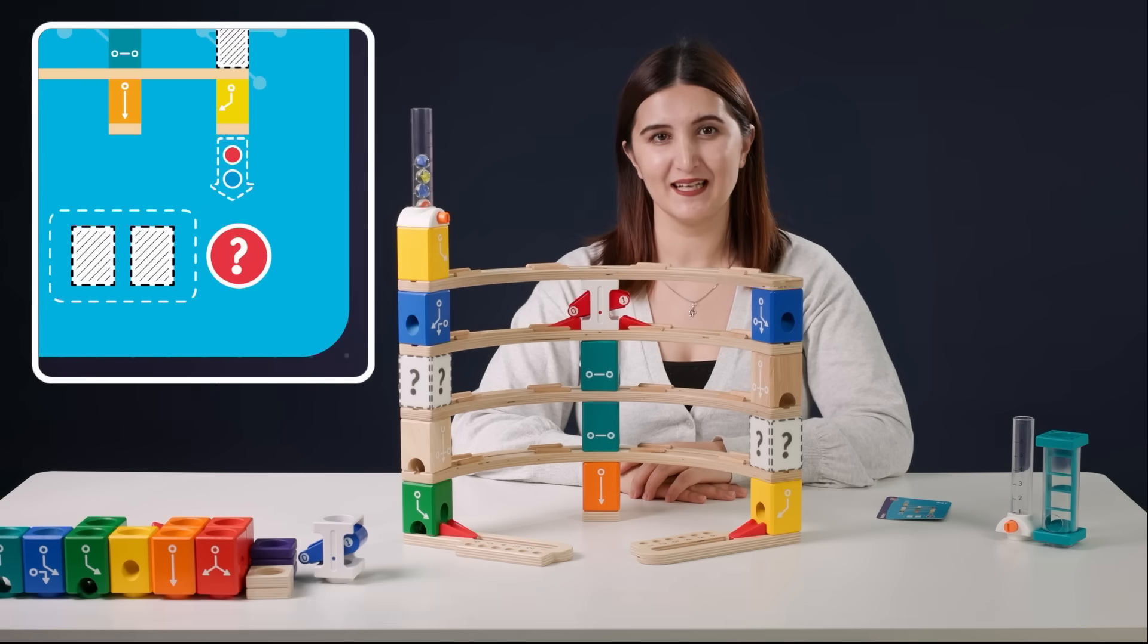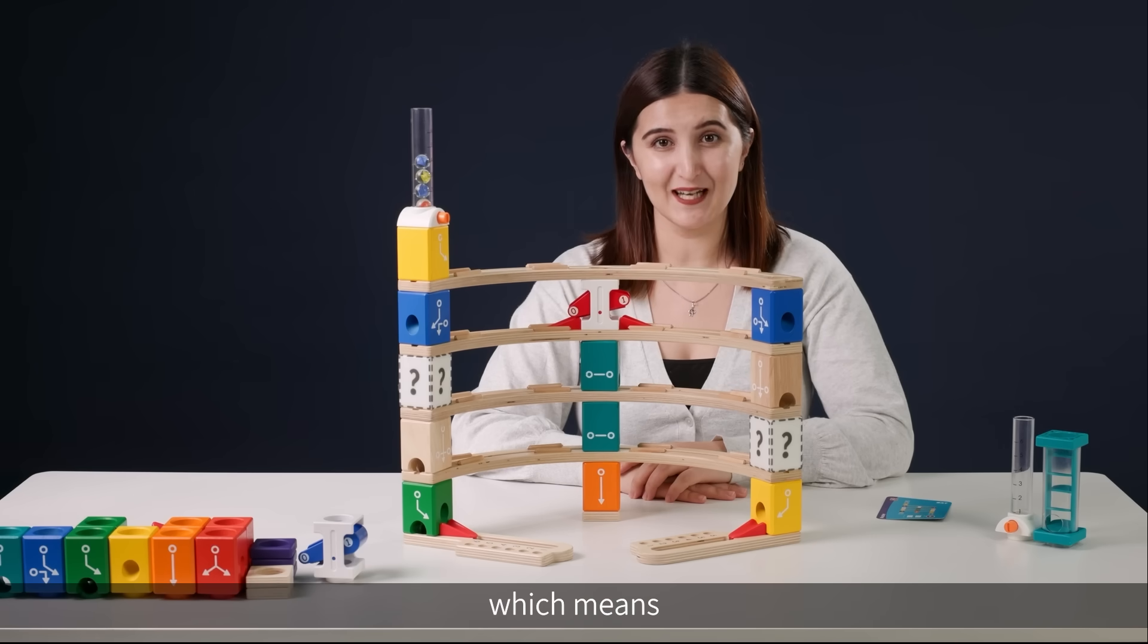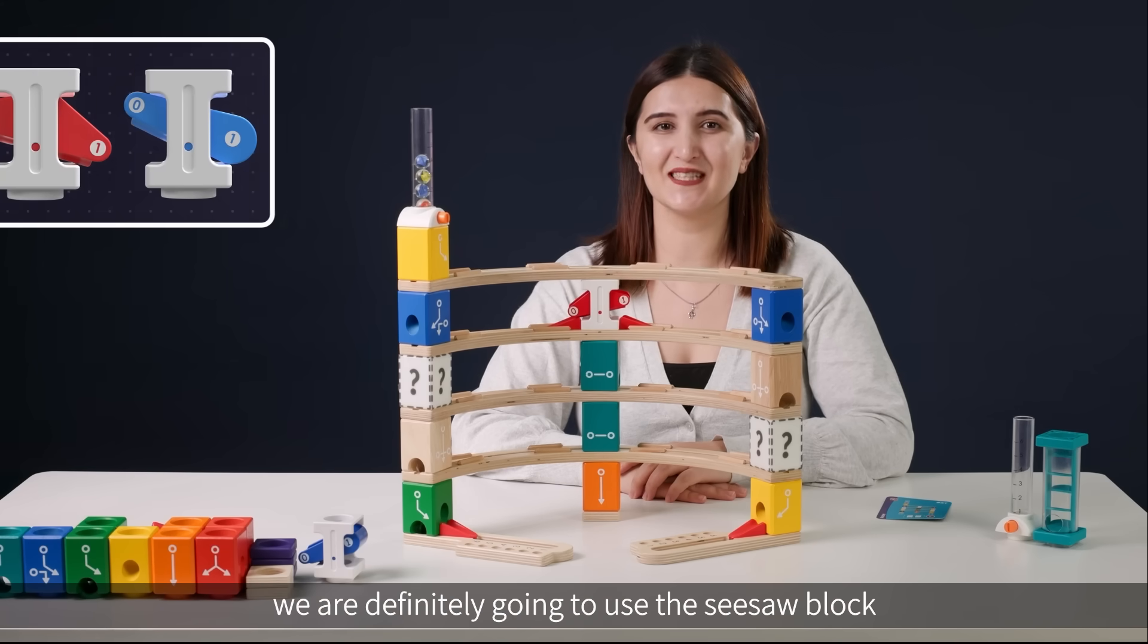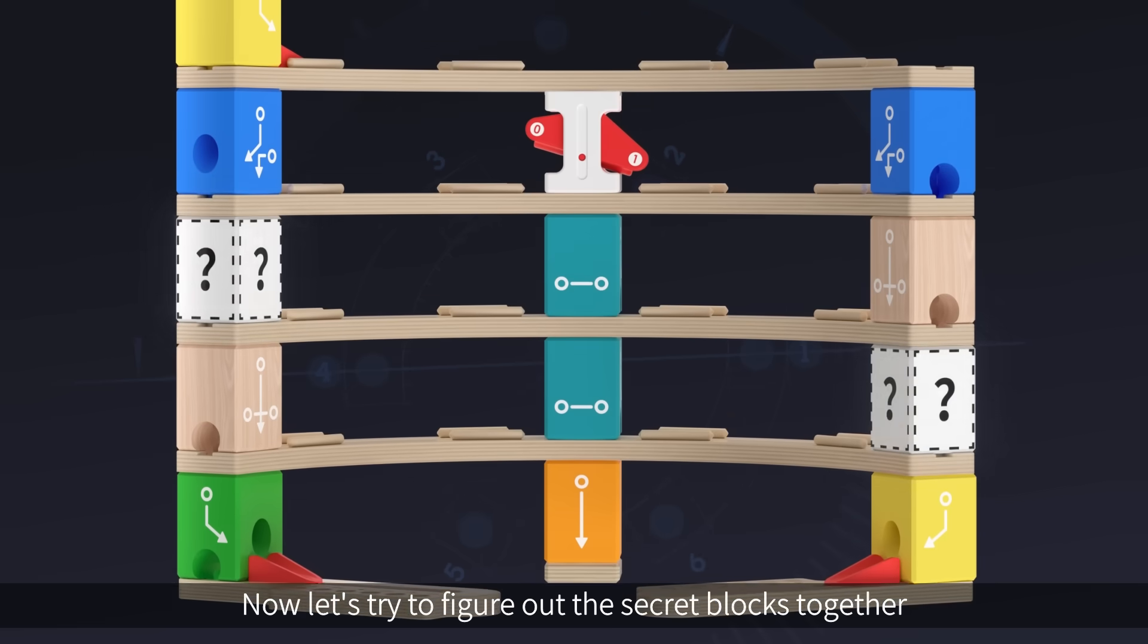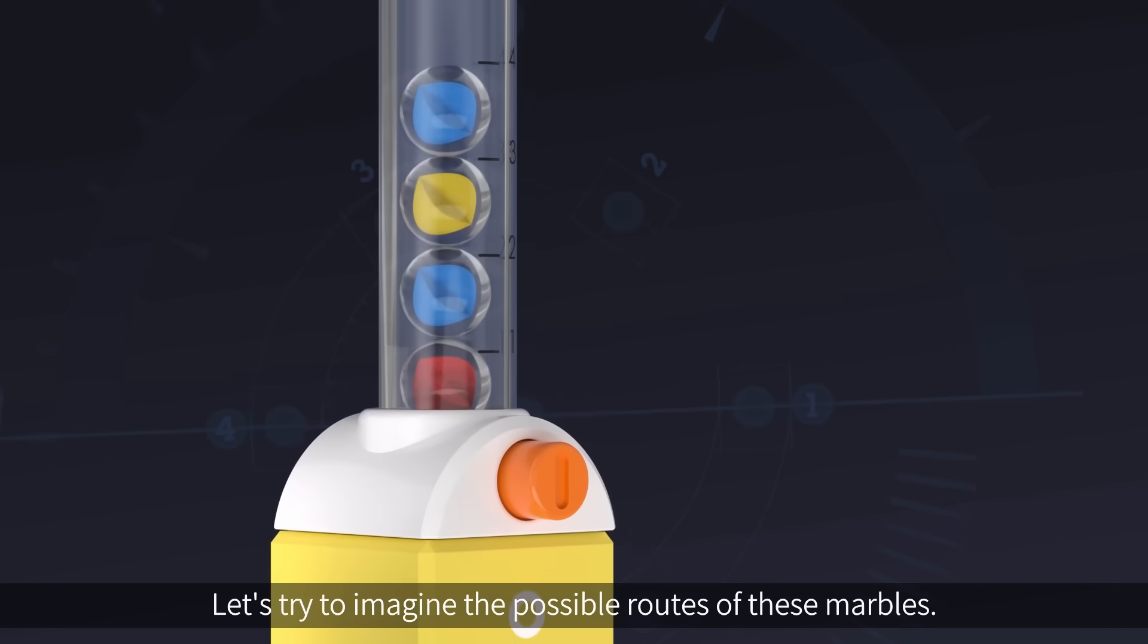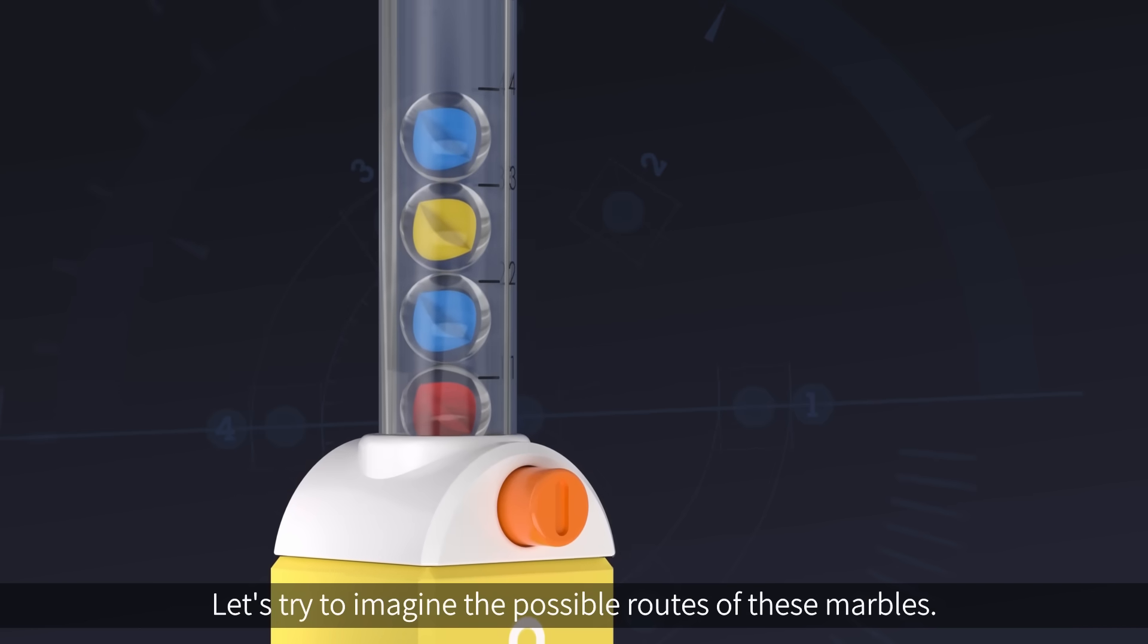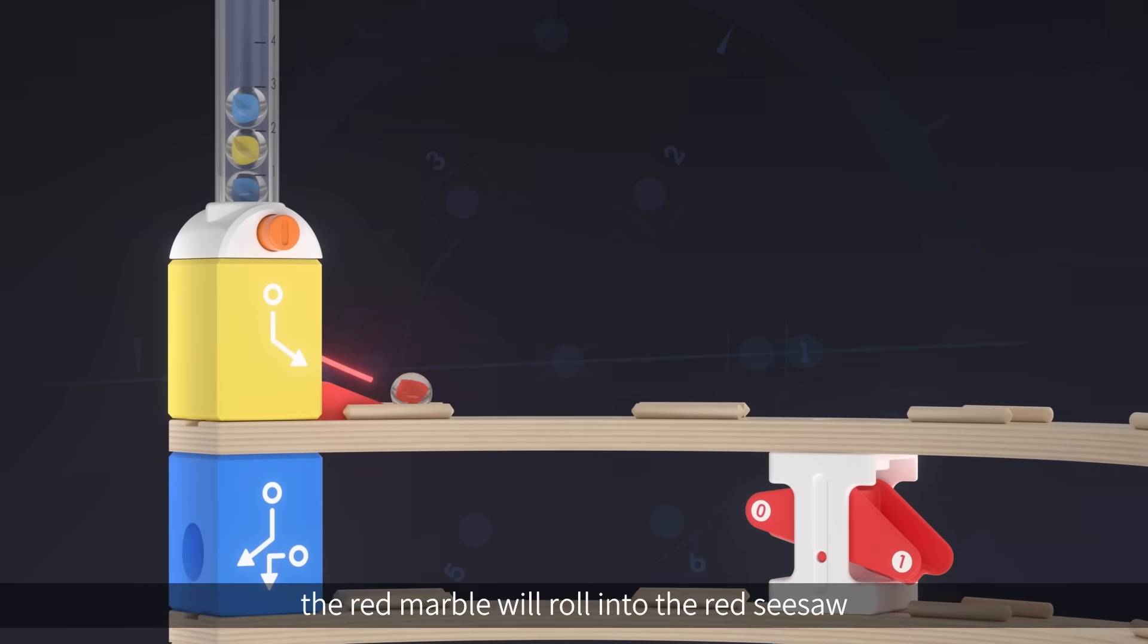It's quite clear that we need to change the sequence of the marbles, which means we are definitely going to use the seesaw block. Now let's try to figure out the secret blocks together. Before we start debugging, let's try to imagine the possible routes of these marbles.